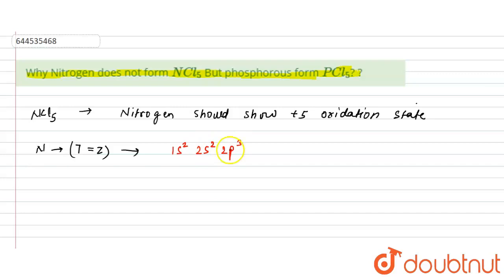This is the way you will write the electronic configuration of nitrogen. When you want to draw its orbitals, this will be 1s orbital, 2s orbital, and this is the 2p orbital. Two electrons are present here, two electrons are present in 2s, and three electrons in 2p.